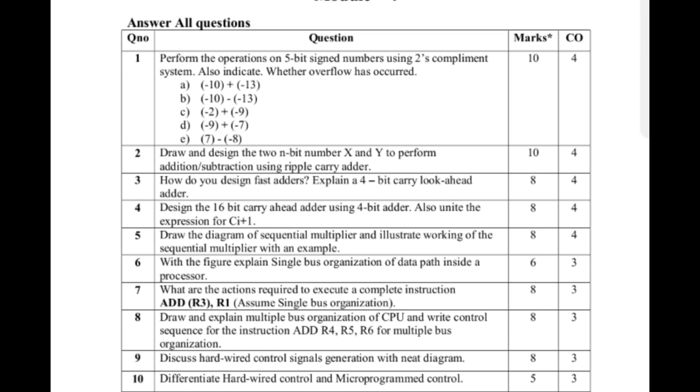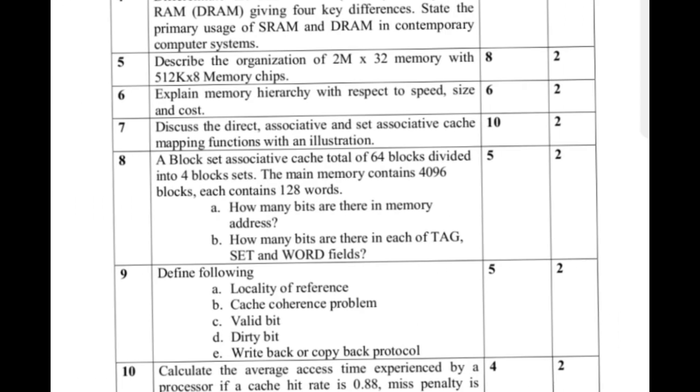In Module 3, you have to cover questions like define and explain memory access time, memory cycle time, hit rate, and miss penalty. Also, question number 8 covers associative cache with a total of 64 blocks. You should cover these questions.